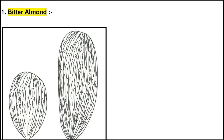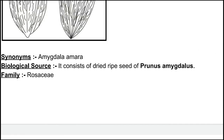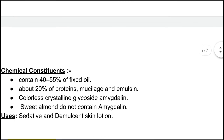This is our bitter almond diagram. First, the synonyms: Amygdala amyra. Next, biological source — it consists of dried ripe seeds of Prunus amygdalus. The family is Rosaceae.